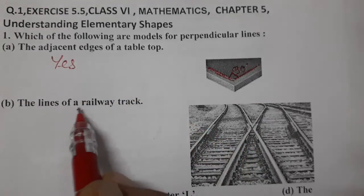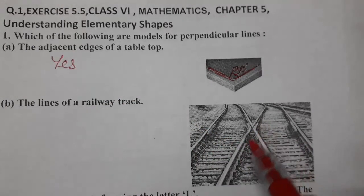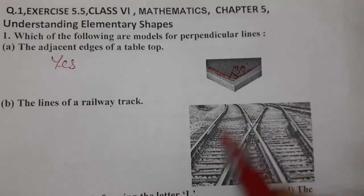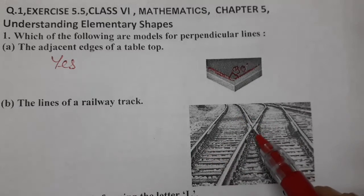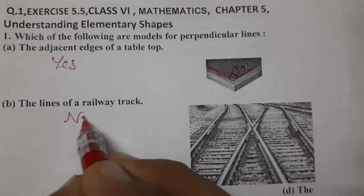Second one, the lines of railway track. So lines are not perpendicular. Here they are only intersecting or here they are parallel, but they are not perpendicular, not making an angle of 90 degrees in the railway track. So answer is no.